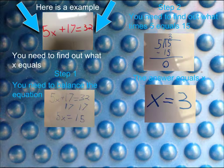Here is an example. 5x plus 17 equals 32. You need to find out what x equals.